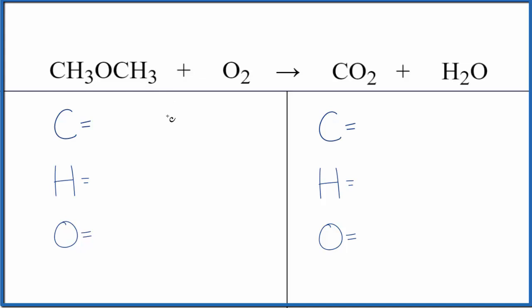We'll also look at the type of reaction, then we'll write the states. Let's talk about the type of reaction here. So we have this carbon, this hydrocarbon here, combining with oxygen, and we get carbon dioxide and water. So when you see oxygen, carbon dioxide, and water like this, you're thinking combustion. So this is a combustion reaction.